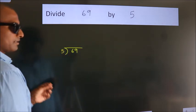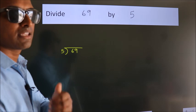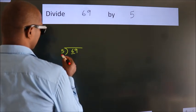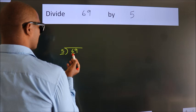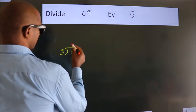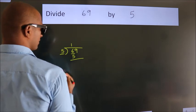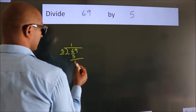This is step 1. Next, here we have 6, here 5. A number close to 6 in the 5 table is 5 once, 5. Now we should subtract. We get 1.